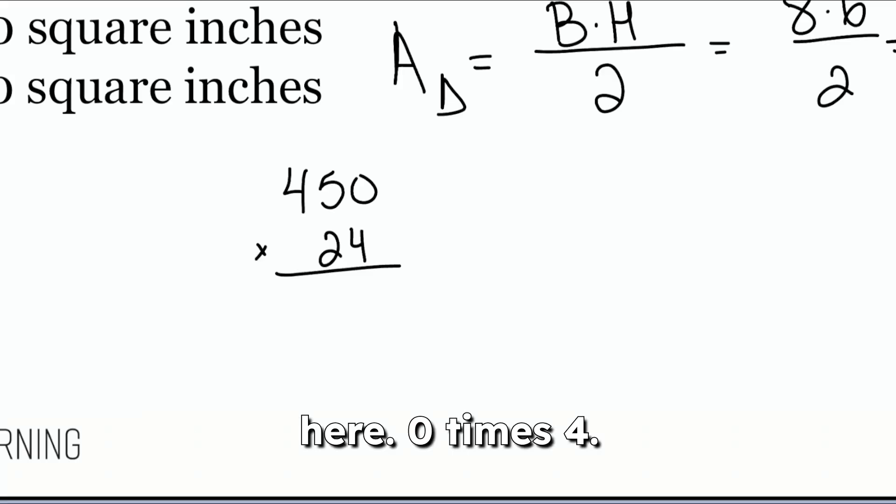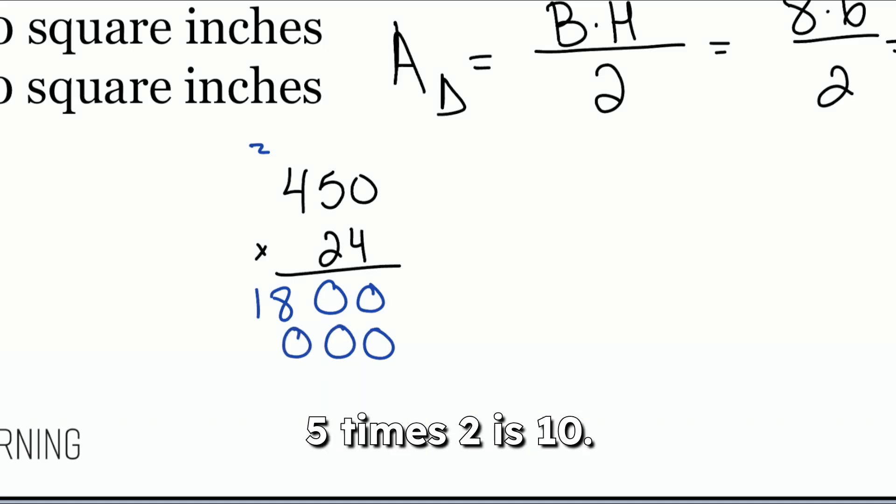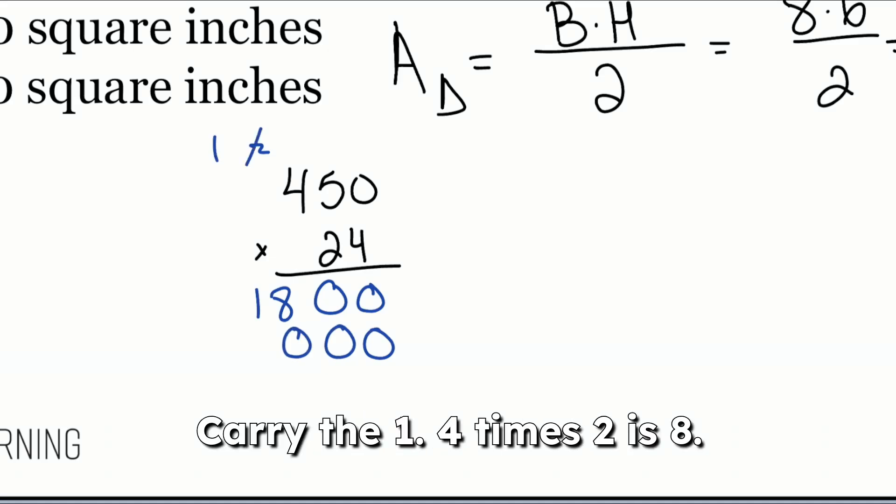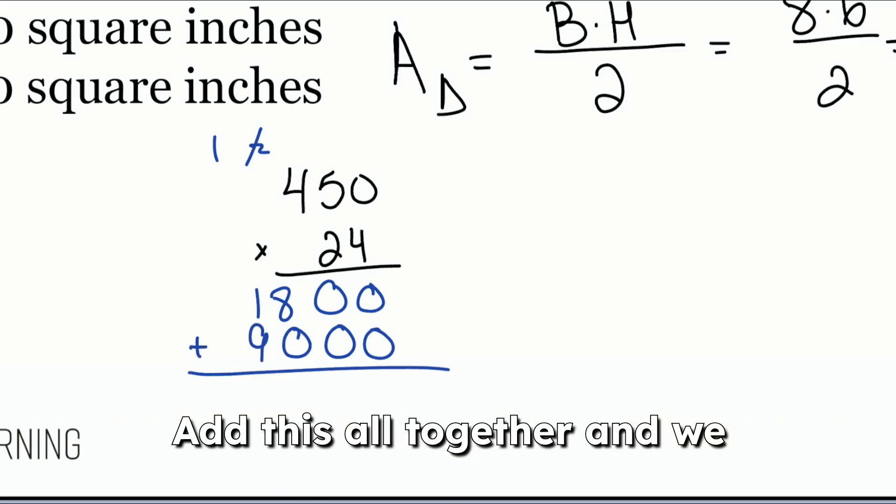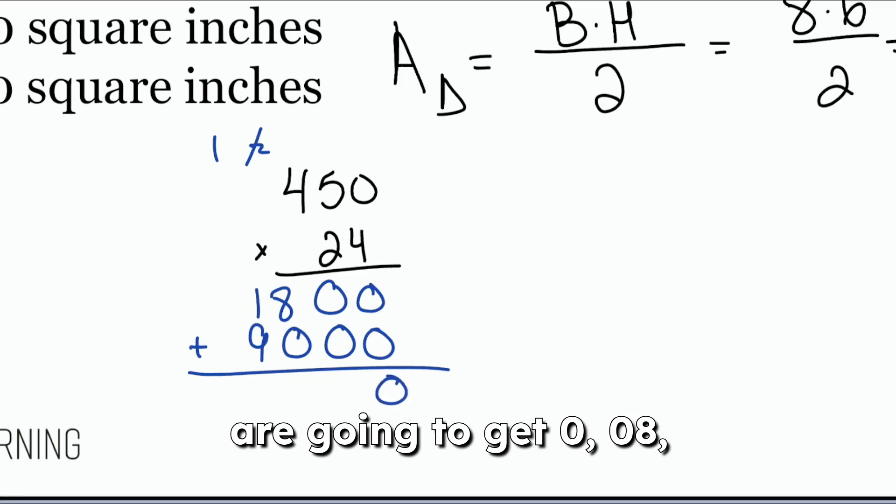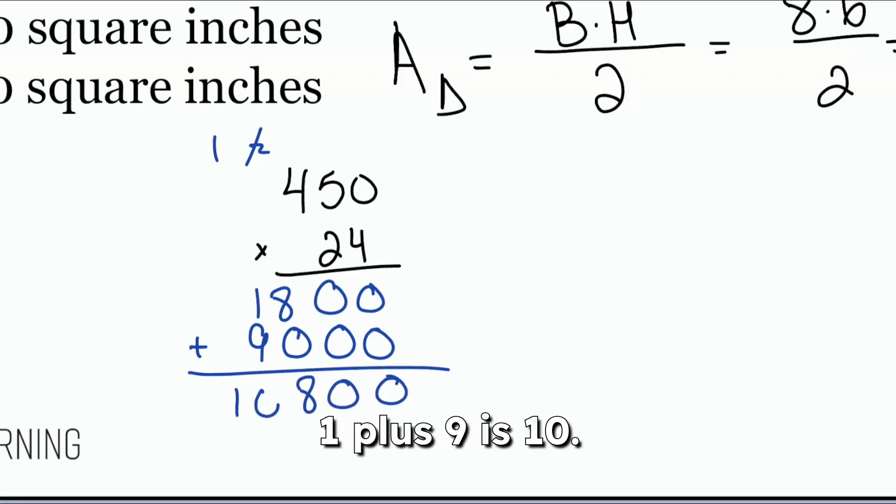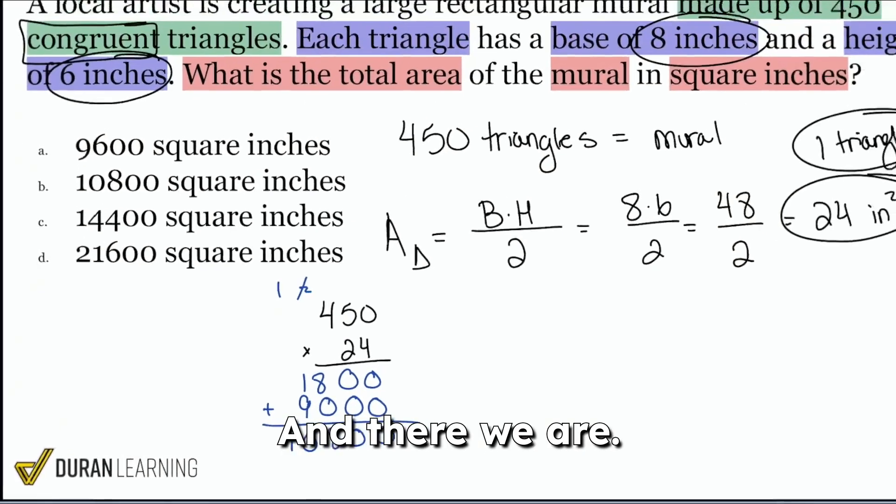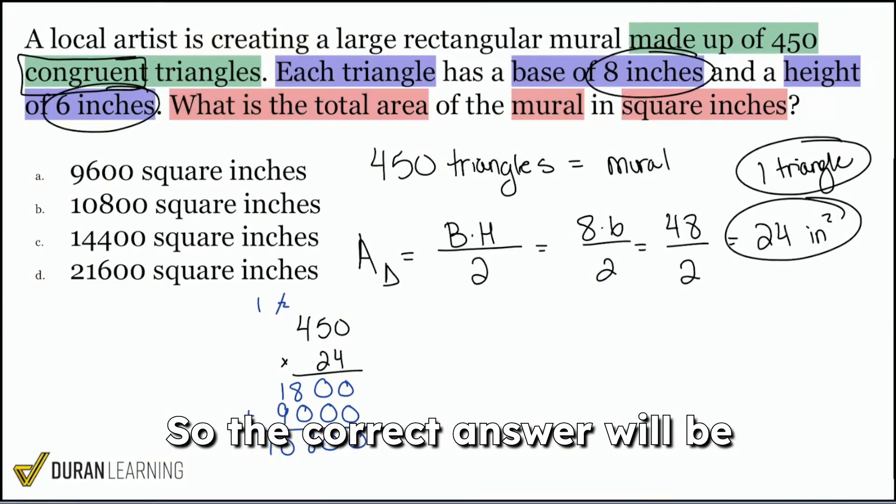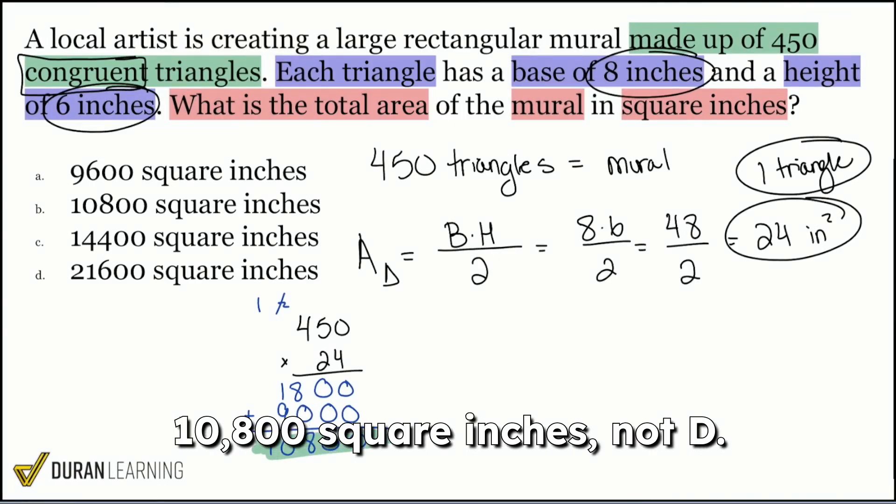So we'll go ahead and continue here. 0 times 4. 5 times 4 is 20. 4 times 4 is 16. Carry the 2 is 18. Next up, 0 times 2. 5 times 2 is 10. Carry the 1. 4 times 2 is 8. Carry the 1 is 9. Add this all together, and we are going to get 0, 0, 8. 1 plus 9 is 10. And there we are.